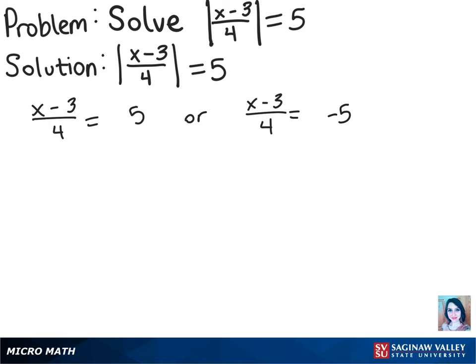Let's pay attention to the equation on the left first. We can multiply both sides by 4 so that we get x minus 3 is equal to 20. And then we can add 3 to both sides so that we have x equals 23.